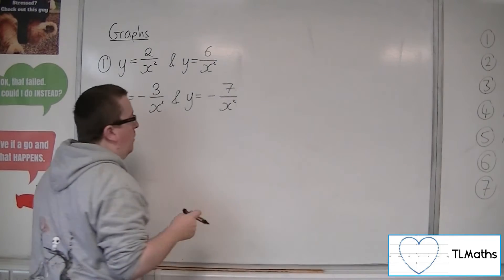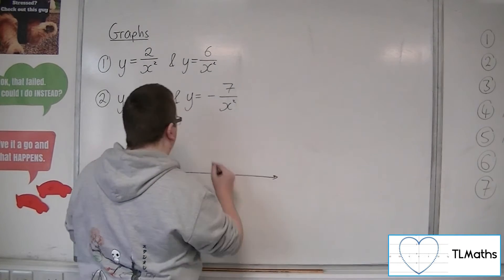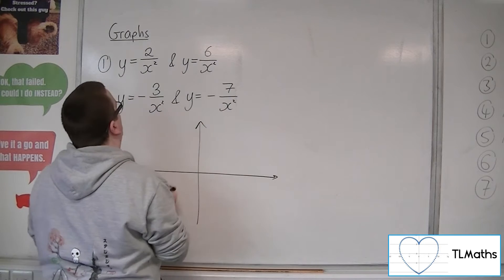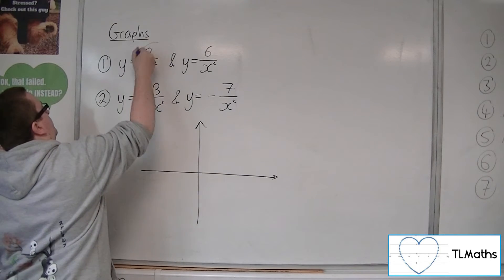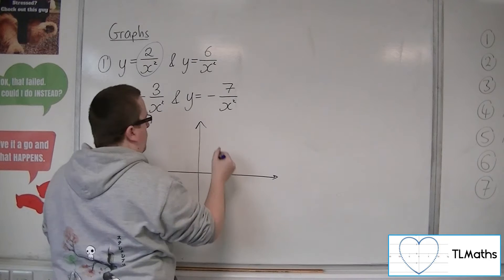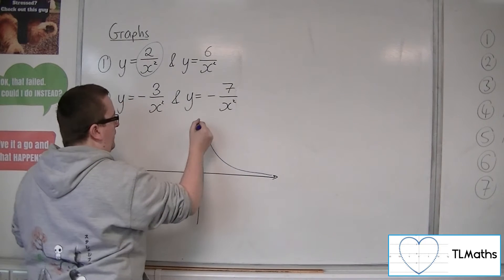So we now know what y equals 1 over x squared looks like. So if I was to draw y equals 2 over x squared, I'm going to draw that one in blue. So what it would look like is something like this.